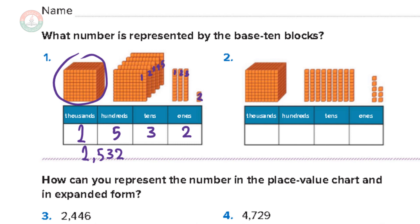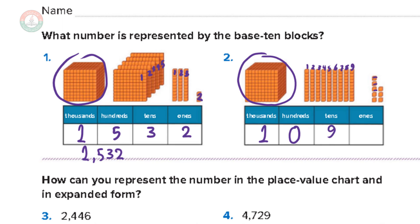Number two: again we have one big cube, which is one thousand. For the hundreds, we have no flats, so we have zero hundreds. These rods are tens — we have one, two, three, four, five, six, seven, eight, nine rods, so we have nine tens. Then we have one, two, three, four, five, six, seven, eight units — eight ones. So our number is 1098. If we have no hundreds, we put zero in the hundreds place, because without that zero the number becomes three digits.